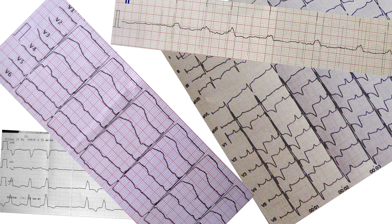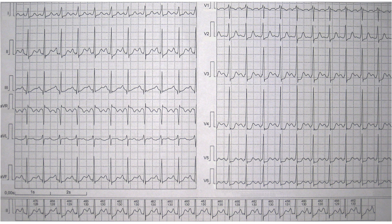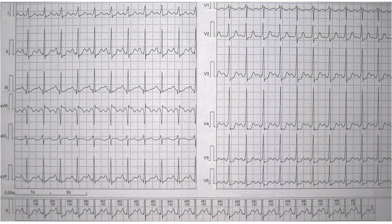6-channel and 12-channel ECG machines are the most common. 6-channel ECG machines acquire all 12 leads simultaneously and record 6 leads at a time. First, leads 1, 2, 3, AVR, AVL, and AVF are recorded, then precordial leads are printed. Usually a rhythmogram is recorded below both parts of the strip. The rhythmogram is a useful tool for diagnosing some arrhythmias because it records ECG for a longer period of time and more QRS complexes are recorded. The rhythmogram is usually recorded in lead 2.